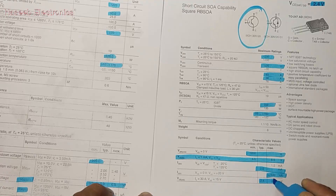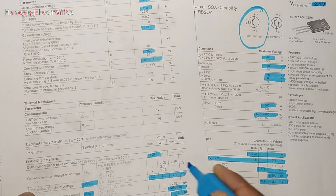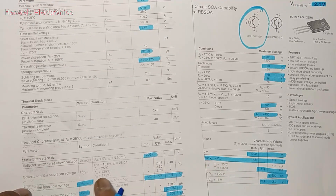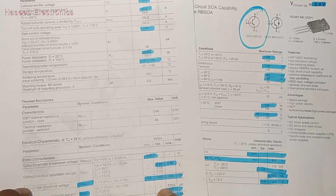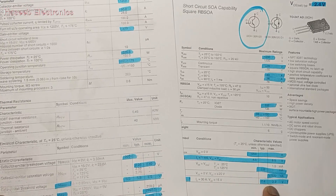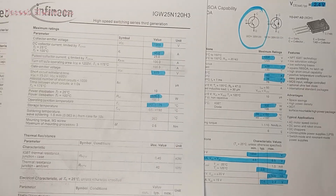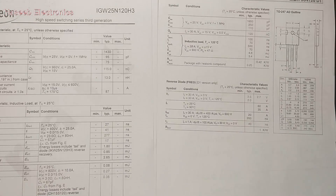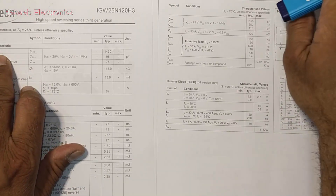VCE saturation on the replacement is 2.4 to 2.9 V, and the original is 2.4 V. We can say this is acceptable because the replacement has more current capability. These two parameters are essentially the same.